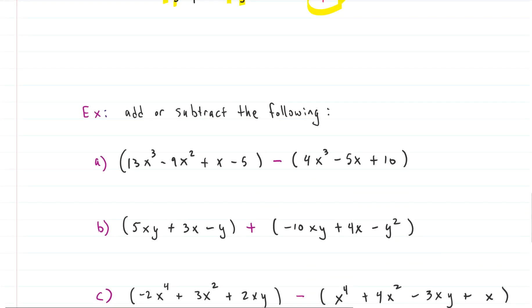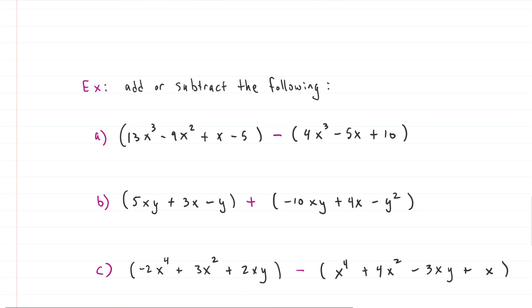I think the biggest thing, the biggest issue I see with students, is that they don't distribute this negative through the second one. That's super important. You've got to make sure that negative is distributed through each of the terms. And then after that, you're just adding. You're just combining like terms. So let's do that. But if we did that, then the first one would be negative. The 4x cubed would go negative. The negative 5x would go positive. And the 10 at the end would become negative. Let's do it right there. Negative 10.